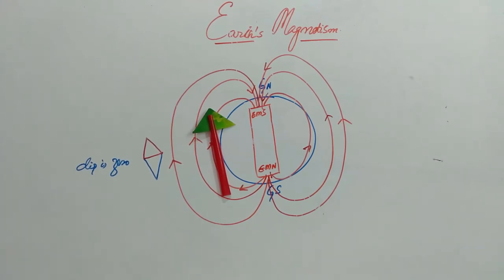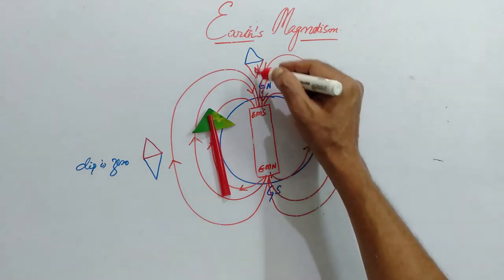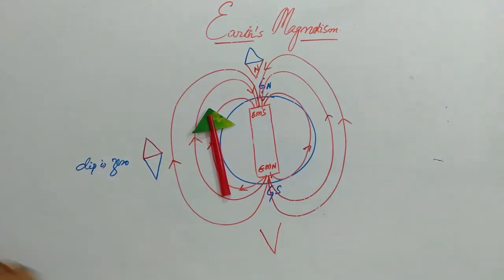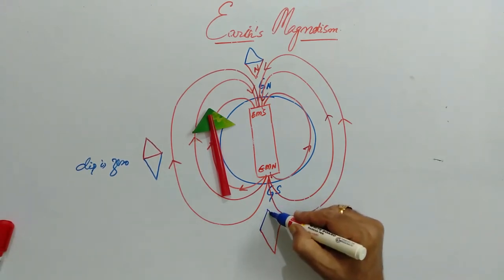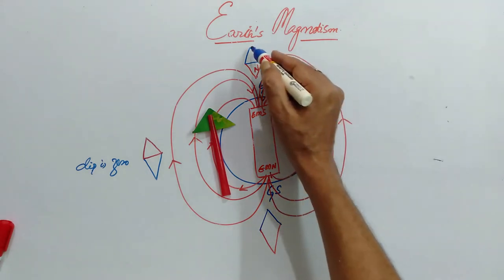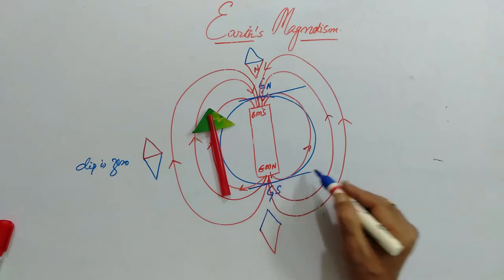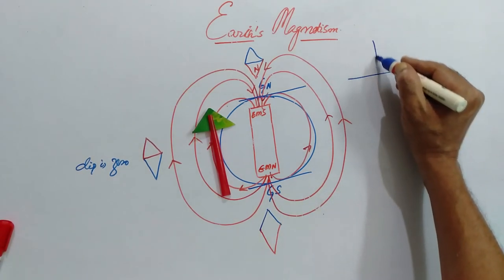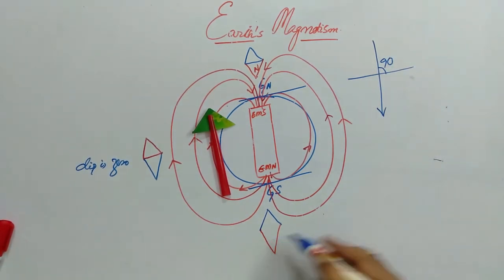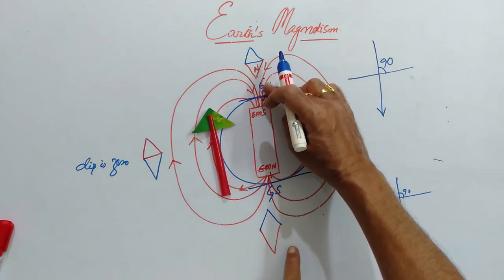If I keep the same magnetic needle here, the North Pole of this magnetic needle will be towards the geographic North and it is vertically downward. Similarly, here, the South Pole will be towards the geographic South. At these two positions — the poles — there is no horizontal component. If you take this surface here or here and observe, the magnetic needle is making 90 degrees. So at the equatorial positions, the dip is zero, and at the poles, it is 90 degrees.